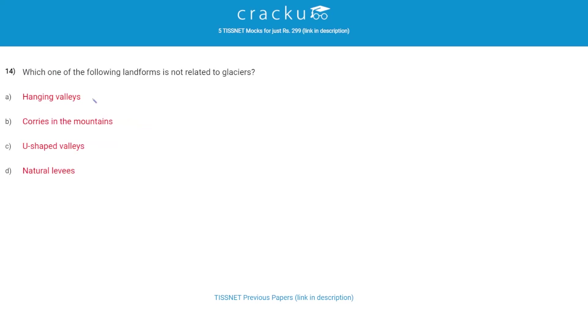Which of the following landforms is not related to glaciers? The correct answer is D, Natural Levees.